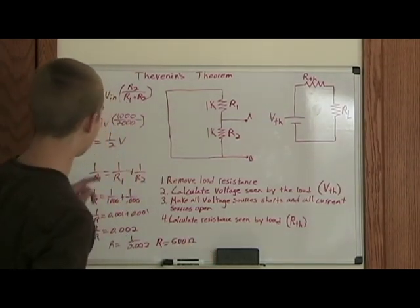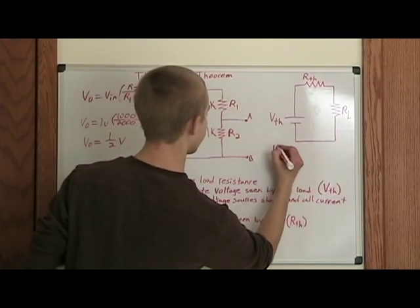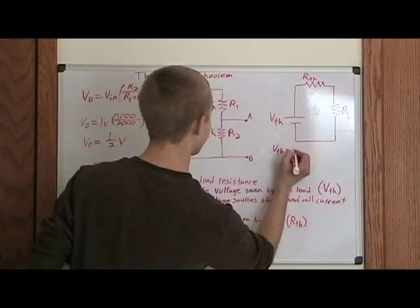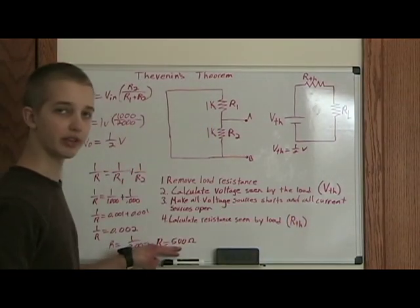Okay, so now we know that the Thevenin voltage is half a volt, so VTH equals one half volt, and the Thevenin resistance is 500 ohms.